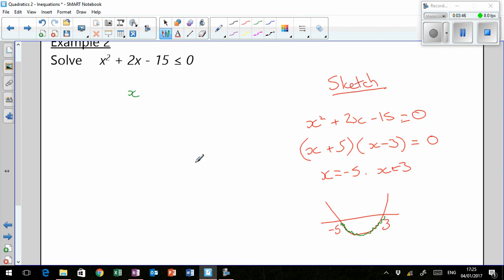So, negative five is less than or equal to x, and x is less than or equal to three. That's your solution. Everything in that range is when that quadratic is less than or equal to zero.